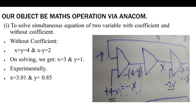So x = 4 - y: we apply the 4-volt reference and get -y, completing the circuit. We apply power and start taking readings. This is the complete circuit for solving two simultaneous equations without coefficients. The result: x = 3.01, confirming the solution.